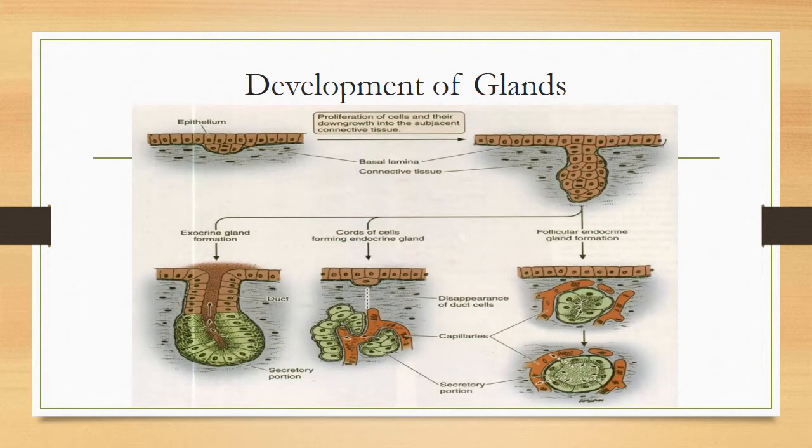How do glands develop? Glands are derived from the ectoderm epithelium, where there is invagination of epithelial cells downward into the connective tissue. These epithelial cells proliferate and grow downwards in a solid cord of cells. Later on, this solid cord becomes canalized and the duct of the gland is formed, connected to the secretory portion.